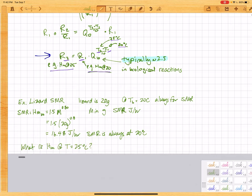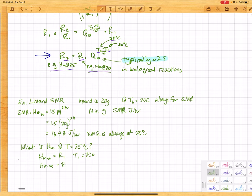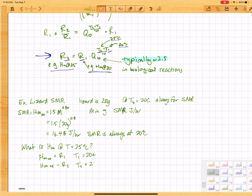So now what is metabolic rate at T equals 25? So we can solve for, so if SMR is HM at 20, so HM at 20 is R1, and that means T1 equals 20 Celsius. So R2 is going to be HM at 25. That will be R2, so naturally T2 is 25 Celsius.